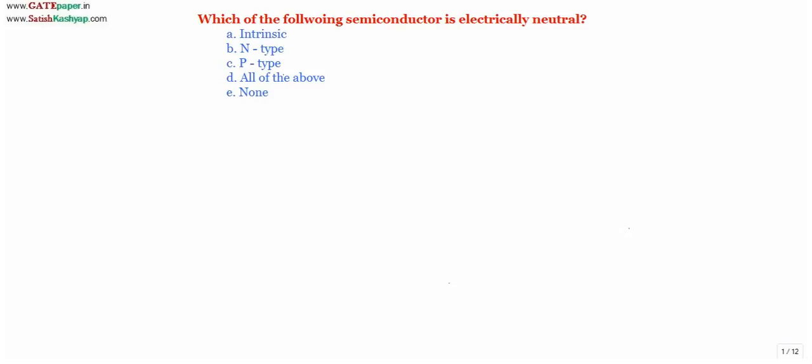Simply, you can say a semiconductor is electrically neutral irrespective of whether it is intrinsic or extrinsic. Now we will see how.